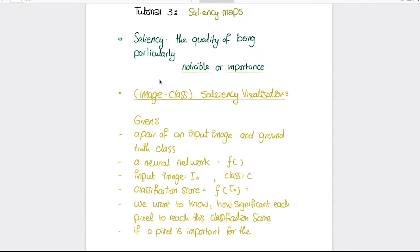We will go through the slides to understand the meaning of Saliency Maps, then we will go through the code to implement our ideas. If you look up 'saliency' in a dictionary, it means the quality of being particularly important. Combining these two ideas, Saliency Maps means a map which represents the importance of each pixel in a specific image.